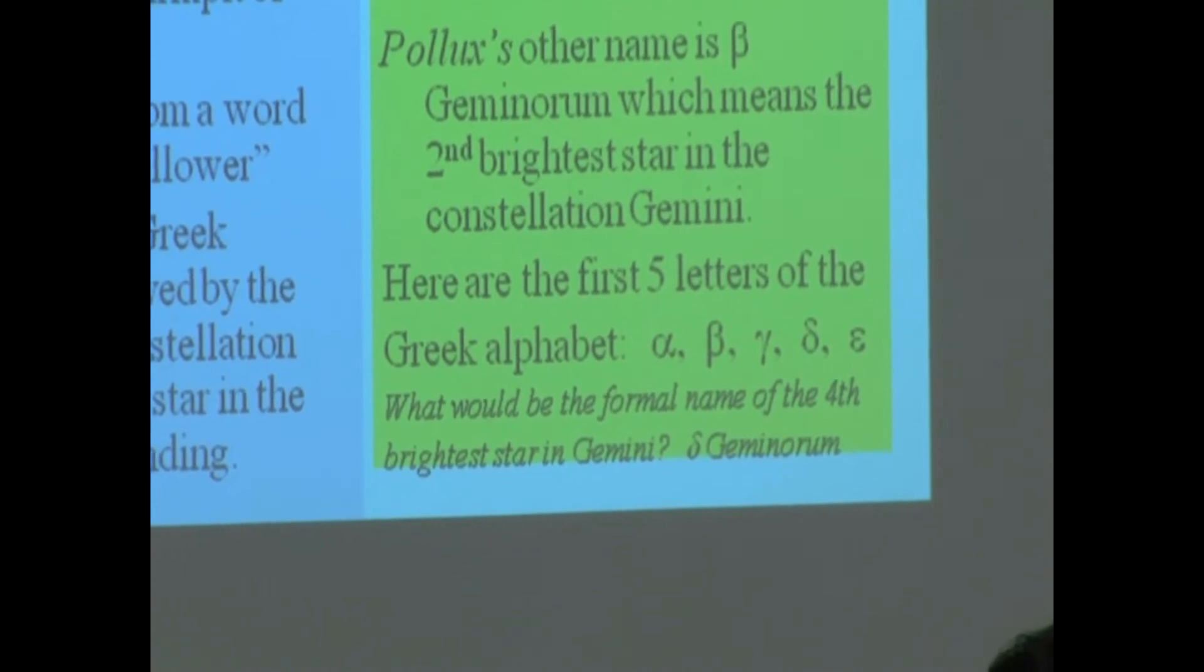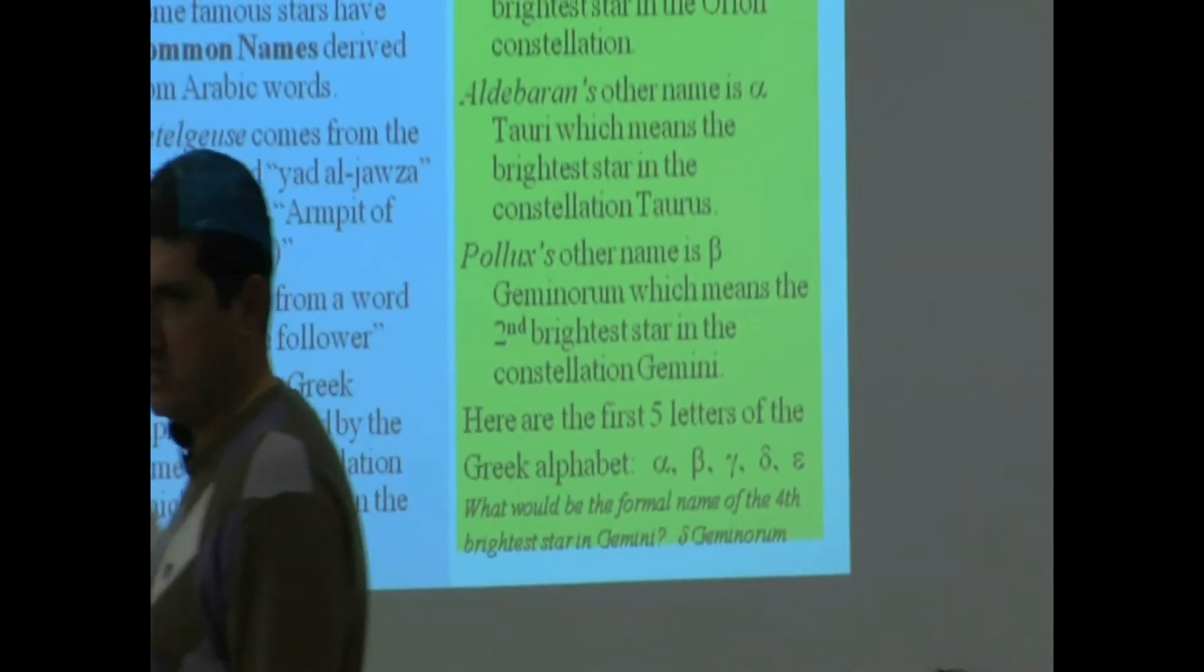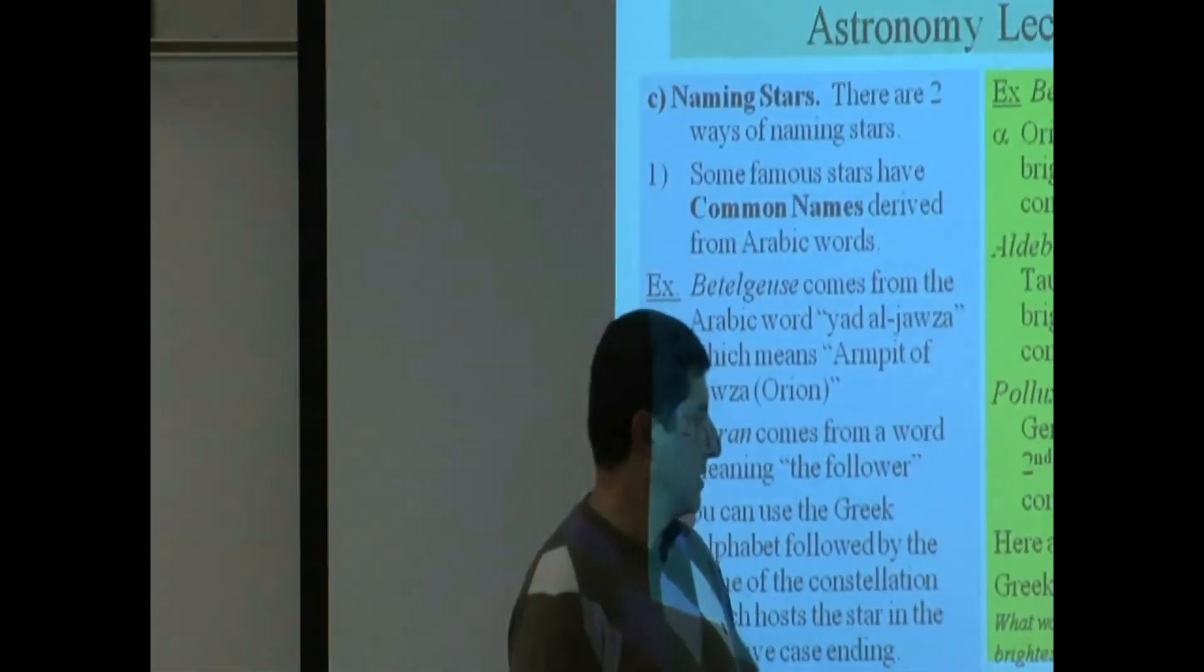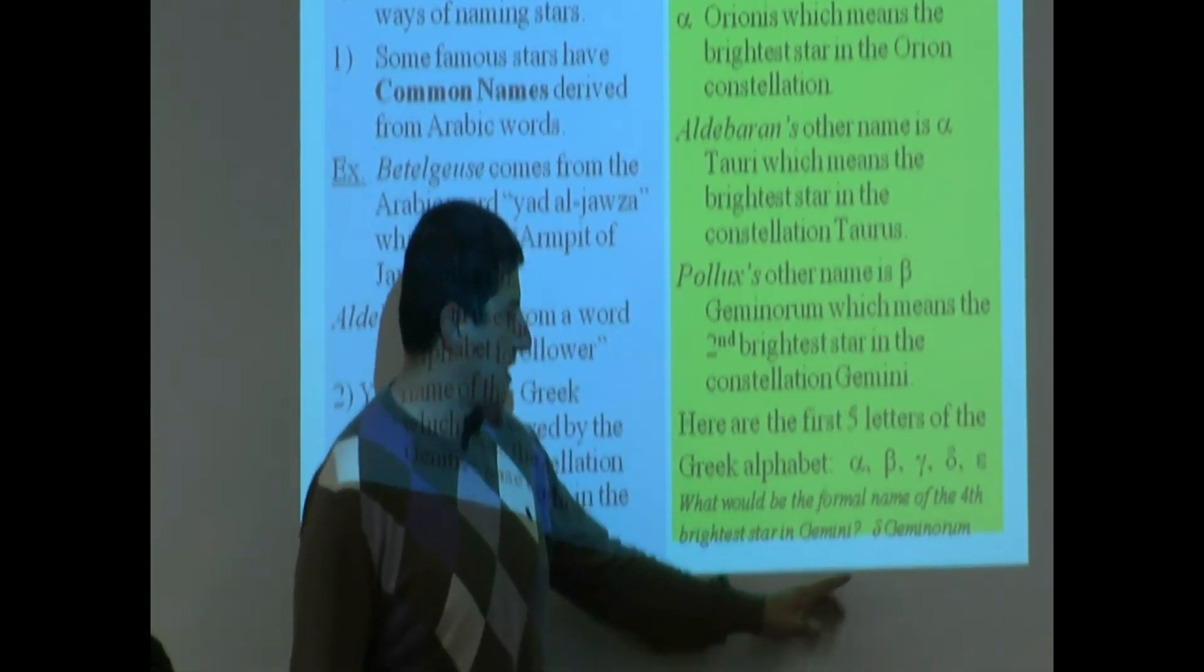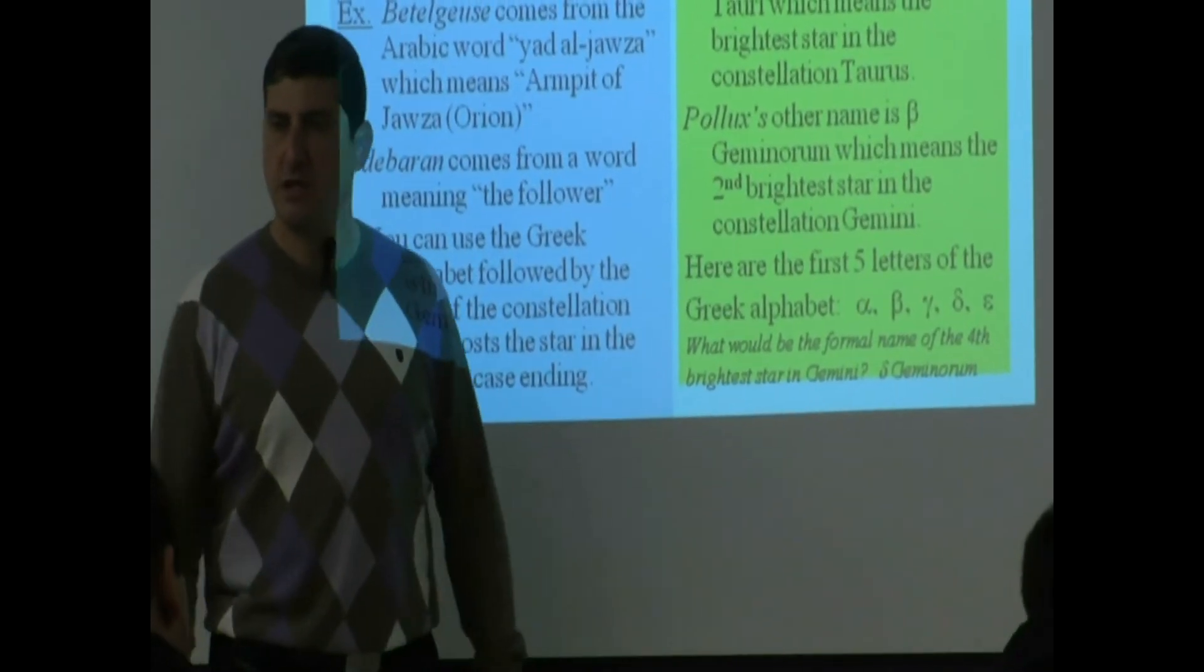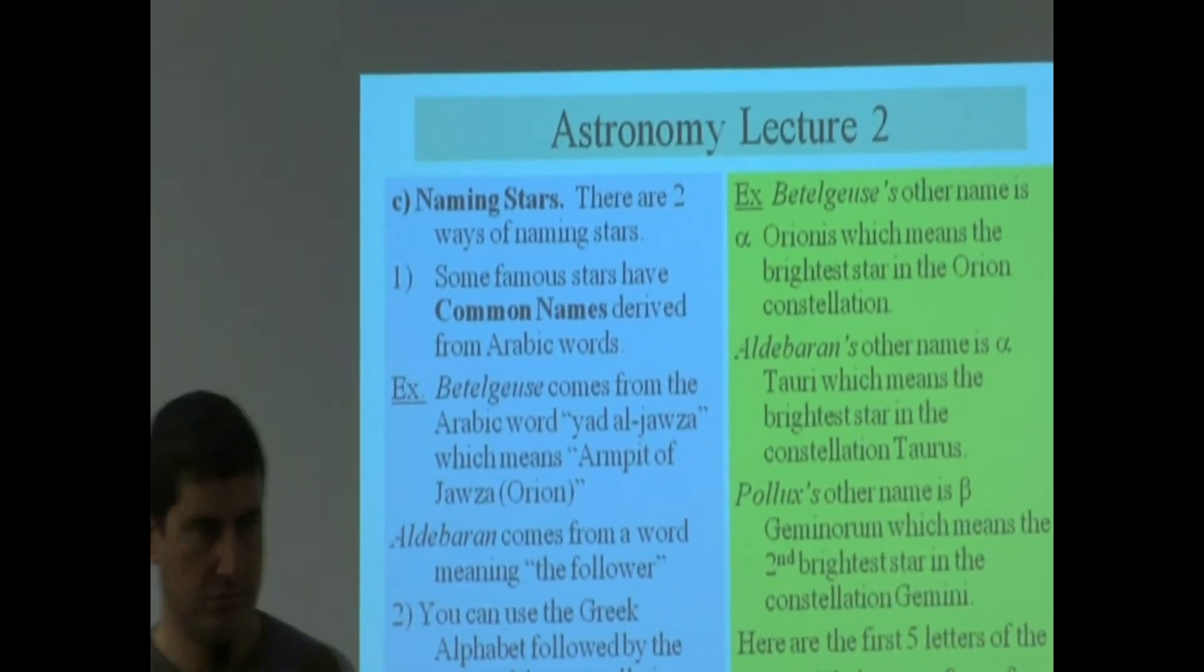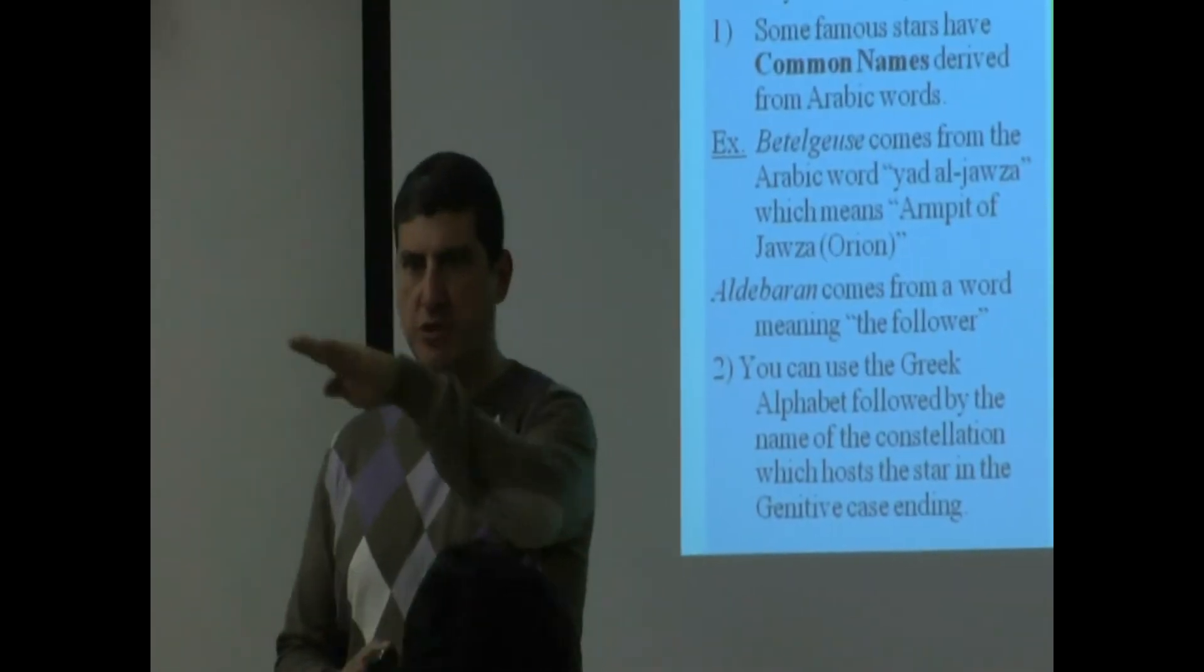That would be the kind of a question that I might ask you on the quiz. What is the formal name of the fourth brightest star in the constellation Gemini? Of course I will have different choices available for you to fill in. So how would you be able to get that? You have to know what? In your mind you have to know the order of the Greek alphabet.